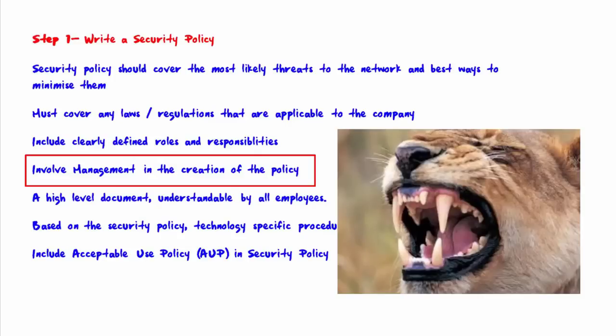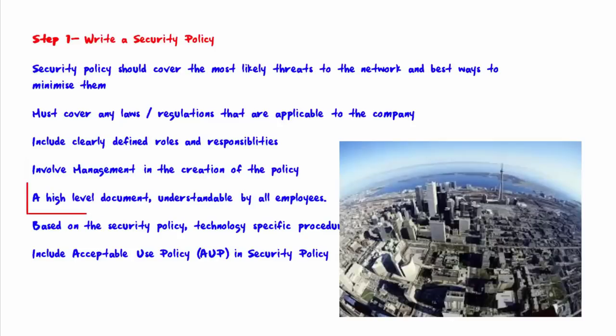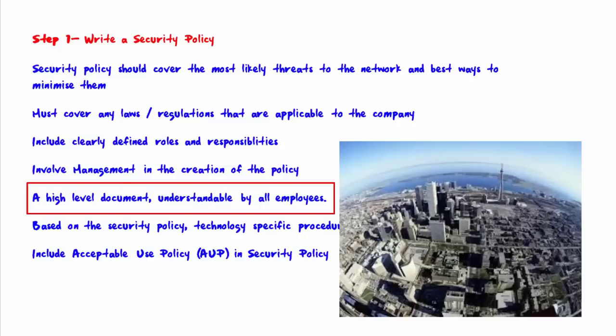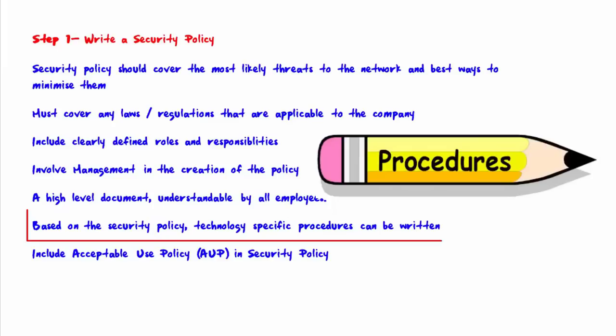Make sure that your security policy is a high-level document understandable by all employees — broad as opposed to technology-specific. Writing the policy this way means it should rarely require updating. Based on the security policy, technology-specific procedures can be written, and as time goes on, procedures may need to be rewritten, but the security policy itself should not.